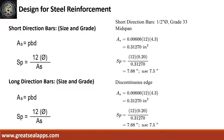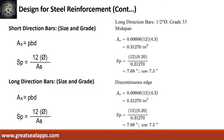For short direction mid-span and discontinuous edge: ρ equals 0.00606, b equals 12, d equals 4.3. The area of steel is 0.3127 square inches, and the spacing for half-inch diameter bar is 7.5 inches on center. For long direction mid-span and discontinuous edge, the area of steel is also 0.3127 square inches with spacing of 7.5 inches on center for half-inch diameter bars.